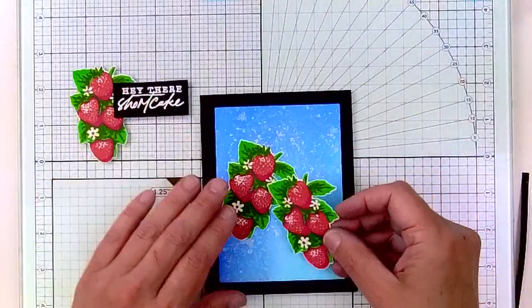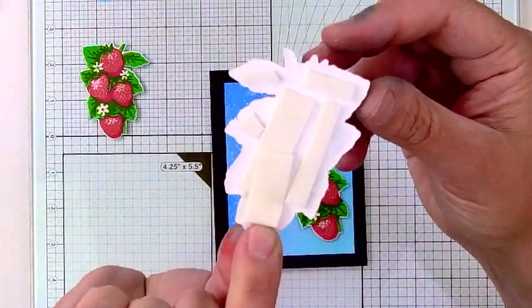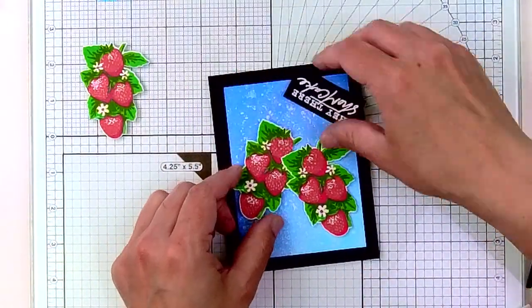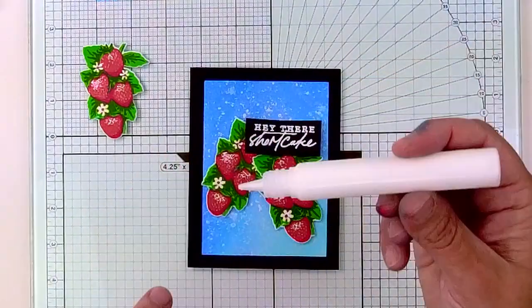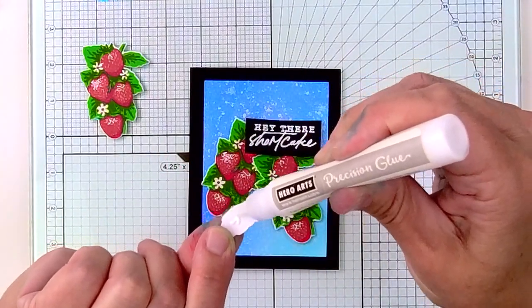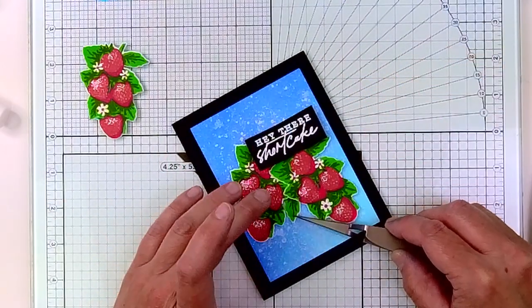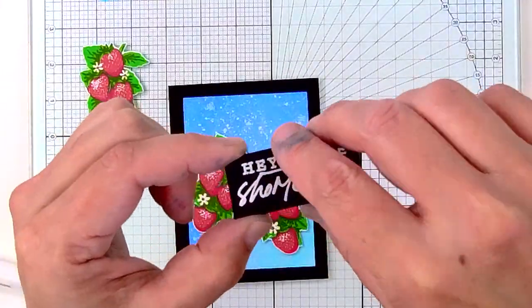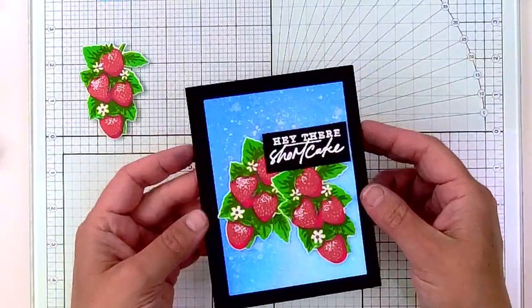I cut that sentiment down, grabbed my strawberry bunches, and now I get to put my card together, so I'm using some foam tape to do that. I did cut off one of the leaves and decided to add it back in at the center between the two strawberry bunches, and now I'm just going to add my hey there shortcake sentiment with some foam tape and a little bit of liquid adhesive.